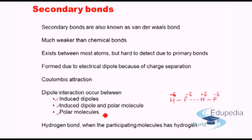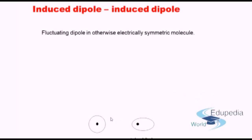Let us now discuss all three types step by step. To begin with induced dipole — that is, induced dipole to induced dipole secondary bond. Any atom as such is mainly symmetric, and a symmetric atom has a symmetric charge distribution, thereby having no disparity of charge. There is a positive charge due to the protons and the negative electron revolves around it symmetrically. However, the symmetry of the atom can be broken and fluctuating dipoles are momentarily created.